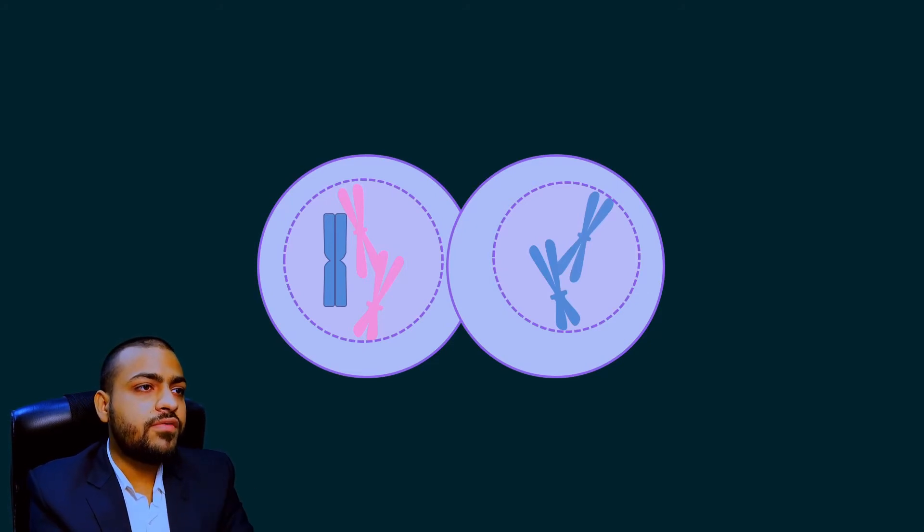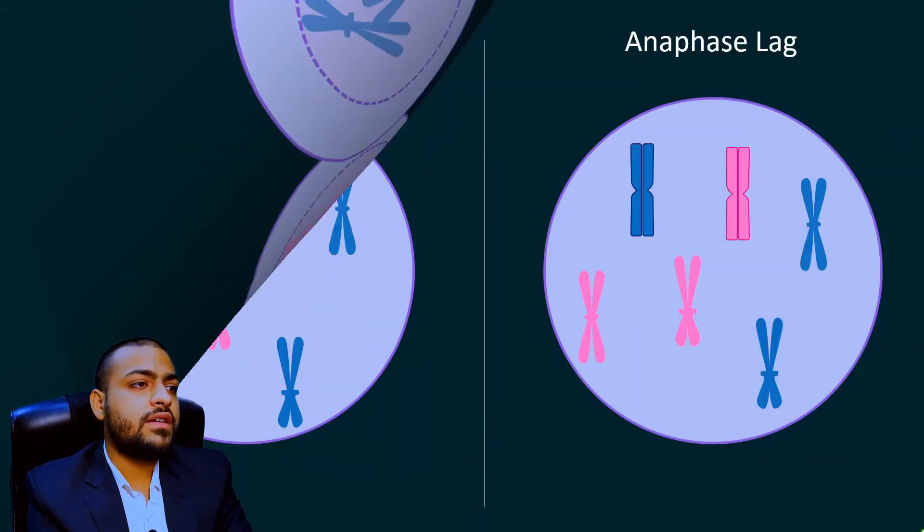So because of anaphase lag there is monosomy here. Now let's compare it with the non-disjunction. Here let's suppose non-disjunction is going on and here anaphase lag is going on.